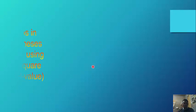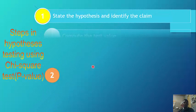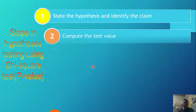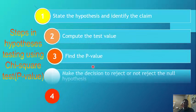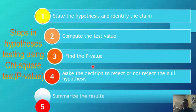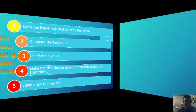We now have the steps in hypothesis testing using the chi-square test and the p-value method. Step 1: state the hypothesis and identify the claim. Step 2: compute the test value. Step 3: find the p-value. Step 4: make the decision to reject or not reject the null hypothesis. Step 5: summarize the result.